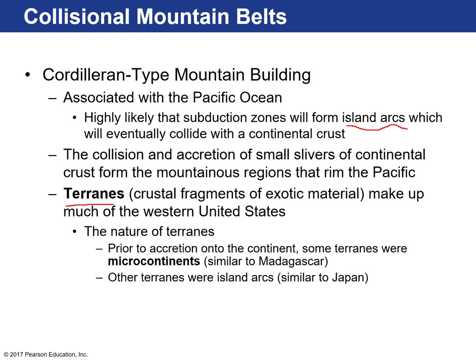In the Pacific Northwest, a lot of the terrains that have been accreted to the American continent used to be microcontinents — similar to what you would think of as Madagascar. Other terrains were island arcs. Think of Japan or the Aleutian Islands — those island arc volcanic-related islands sit on top of ocean crust. Imagine those subducting and the islands of Japan being added to mainland China or to the western United States.